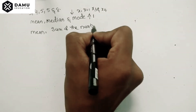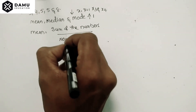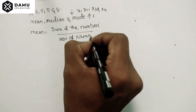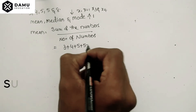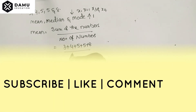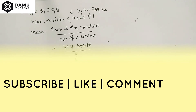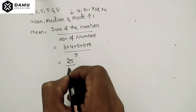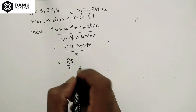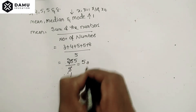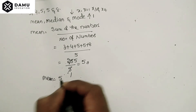The sum of the numbers is three plus four plus five plus five plus eight, divided by five numbers. Three plus four is seven, plus five is twelve, plus five is seventeen, plus eight is twenty-five. So twenty-five divided by five equals five. The mean is five.